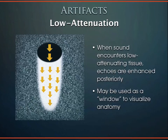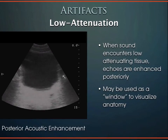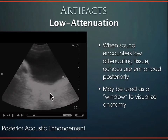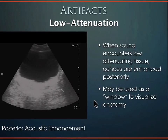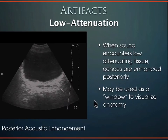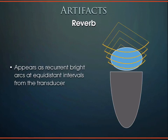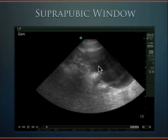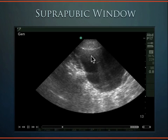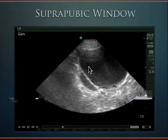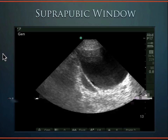Regarding artifacts with the bladder: the bladder is a low-attenuating structure — sound speeds through it, making everything behind it appear hyperechoic. You may need to turn down the far-field gain because structures behind the bladder become over-gained. Another common artifact is reverberation artifact — equidistant bright arcs coming down from the transducer — which we see frequently when imaging the bladder.